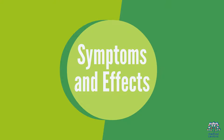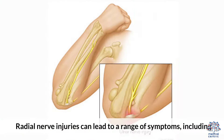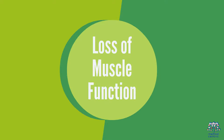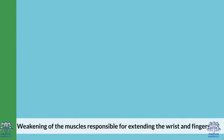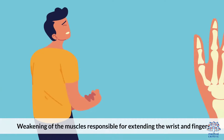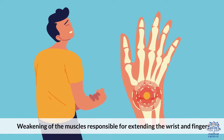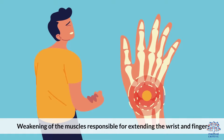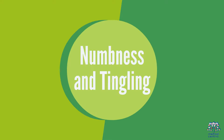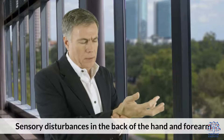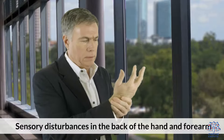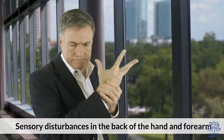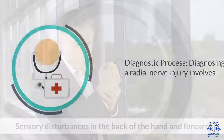Symptoms and Effects: Radial nerve injuries can lead to a range of symptoms, including loss of muscle function, weakening of the muscles responsible for extending the wrist and fingers, numbness and tingling, and sensory disturbances in the back of the hand and forearm.